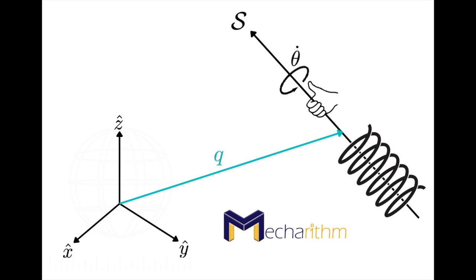Suppose that the configuration of the body frame relative to the space frame at any time is represented by a rotation about and translation along the screw axis S with the rate theta-dot. Note that theta-dot is a scalar that shows how fast the body moves along the screw. The screw axis S can be represented in two ways.